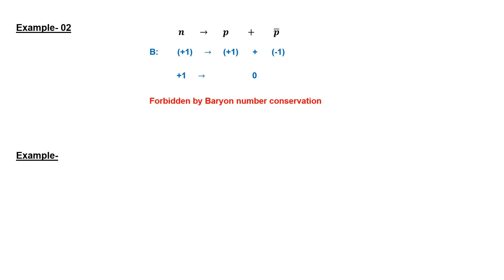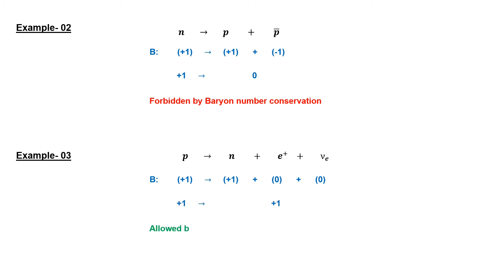This is a beta-plus decay, in which a proton decays into a neutron, a positron, and an electron neutrino. Since the proton and neutron are baryon particles, their baryon number is +1, while the positron and electron neutrino are non-baryonic particles, so their baryon number is 0. Since the baryon number is conserved in this reaction, this reaction is allowed according to baryon number conservation.